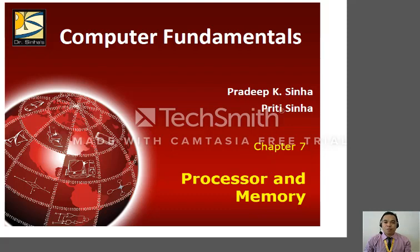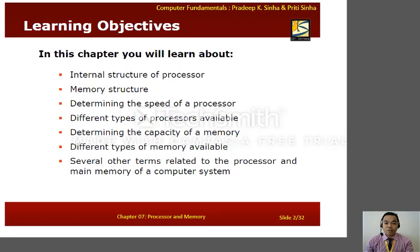Hello, welcome to topic 3 of the Unit Fundamentals of Information Technology. This week I'm going to discuss chapter 7 of the book Computer Fundamentals, entitled Processor and Memory. In this chapter you will learn about the internal structure of the processor, memory structure, determining the speed of a processor, different types of processors available, determining the capacity of a memory, different types of memory available, and several other terms related to the processor and main memory of a computer system.